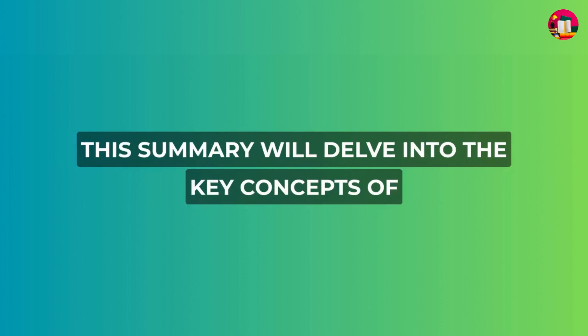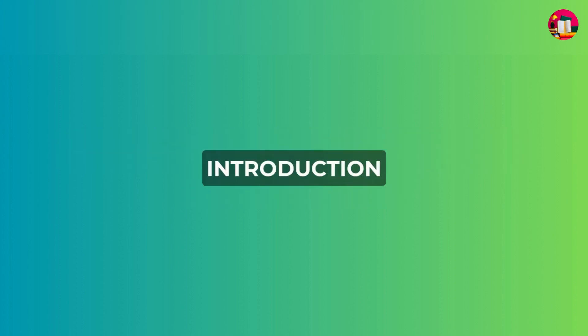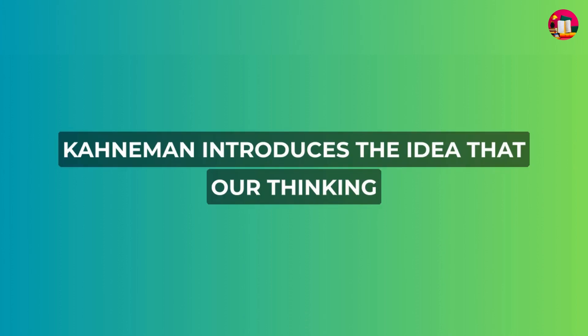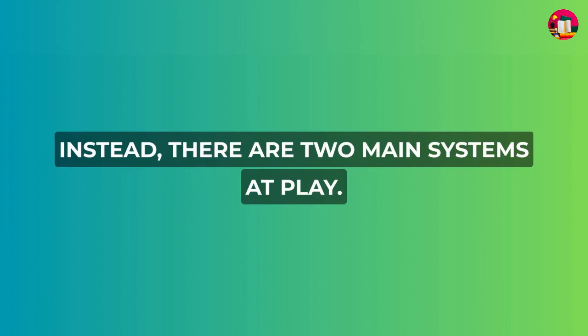This summary will delve into the key concepts of the book and explain them in simple language. Kahneman introduces the idea that our thinking isn't just one unified process — instead, there are two main systems at play.